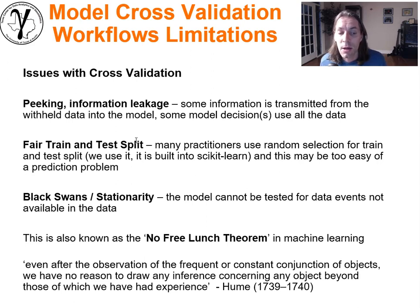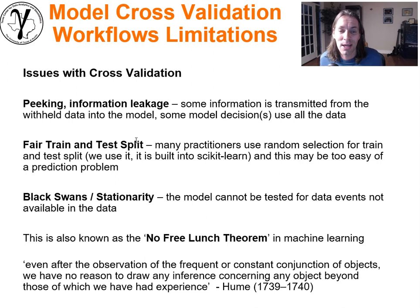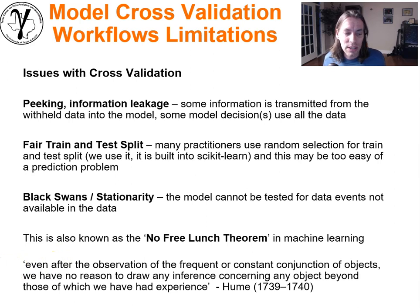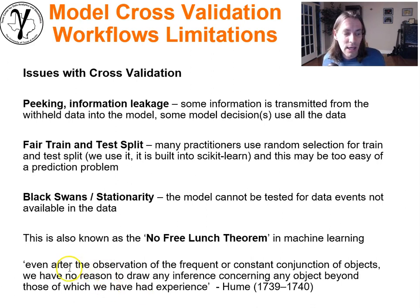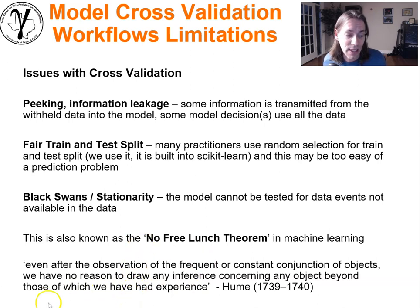Black swans and stationarity: the model cannot be tested for data events that are not available in the data. The idea of black swans is that you spend your entire life studying white swans and won't know anything about the possibility of black swans until you see one. This is also known as the no-free-lunch theorem in machine learning, which we can summarize going back to Hume: even at the observation of the frequent or constant conjunction of objects, we have no reason to draw any inference concerning any object beyond those of which we have had experience. Basically exactly what we were saying about stationarity.